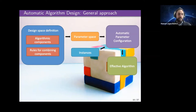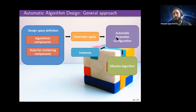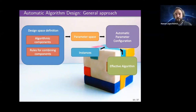However we define this design space — whether by an algorithmic template or a grammar description — we can always convert it into a parameter space made of numerical and categorical decision variables, possibly with constraints, that we can optimize. When we set values to the parameters, we are generating designs. We then use specialized algorithms called automatic parameter configuration tools or hyperparameter optimization tools to automatically search this parameter space, given performance criteria and problem instances of interest.